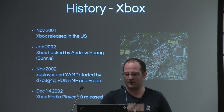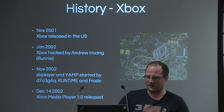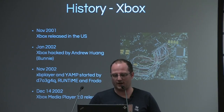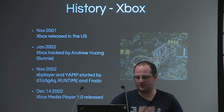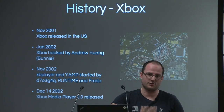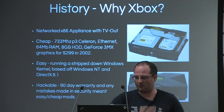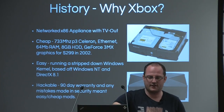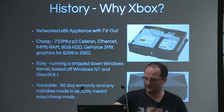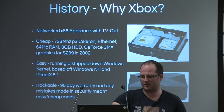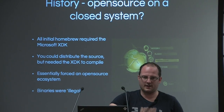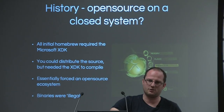A quick history: in November 2002 the Xbox came out. In 2002 it was hacked by Andrew Huang — you can see the chip that was used. In December 2002 the first Xbox Media Player 2.0 was released, which was the first XBMC or Kodi version. Why the Xbox back then? It was networked, x86, cheap, and hackable. After 90 days the warranty was void anyway. Initially it was a homebrew that required the Microsoft XDK. You had to self-compile it, and distributing any binaries was illegal, so every user had to do it themselves.